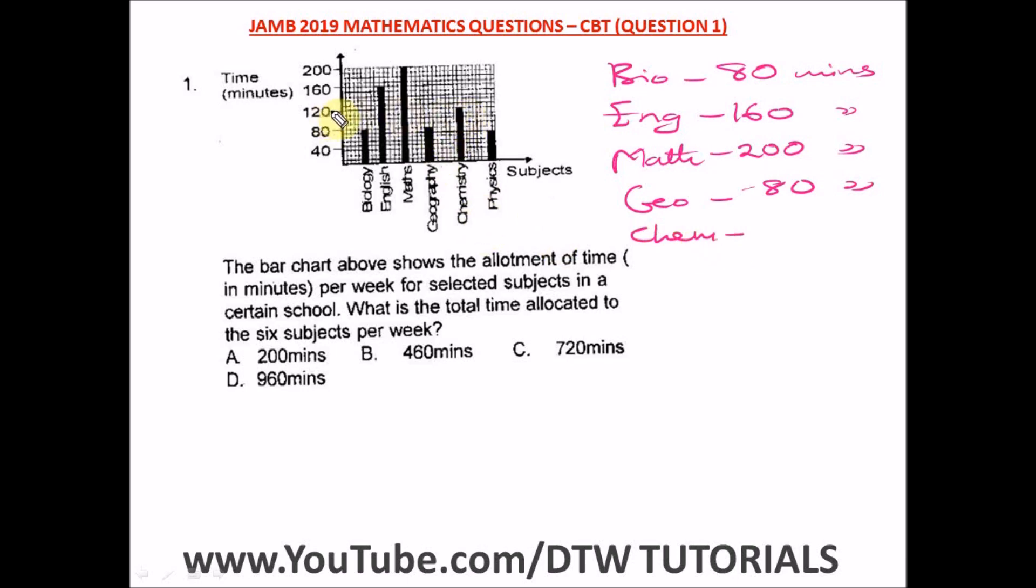Chemistry: 120 minutes. Finally, physics: 80 minutes. We have to add up all these values to get the total time allocated.